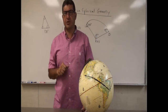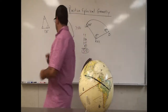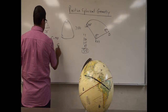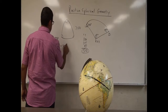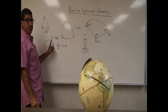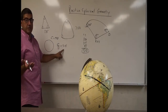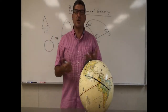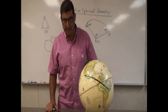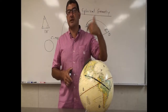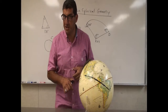So what is another property of flat geometry? If you make a circle, the circumference of the circle should be pi times the diameter. In other words, the ratio of the circumference to the diameter should be 3.14.